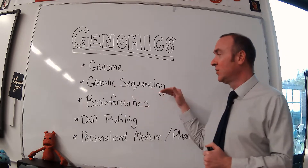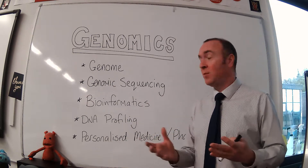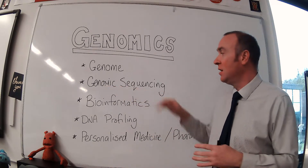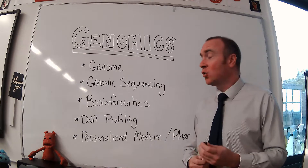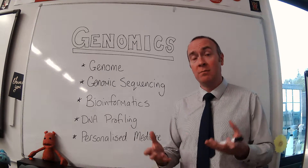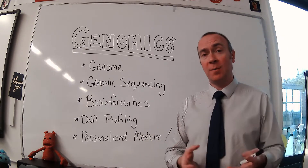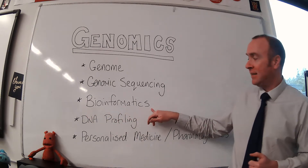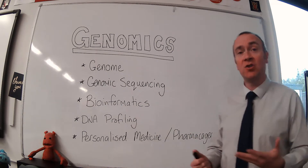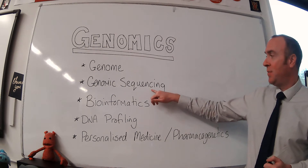Once you know the base sequence, you can start to compare two individuals. We would be dealing with maybe 3 billion base pairs — a long, long chain of A's, T's, C's and G's. In order to compare two sequences with each other, that's not something a human could do by themselves, so you would have to use computer programming and computer power. That is bioinformatics. Anytime you see bioinformatics referred to in a question, your answers generally only involve computers.